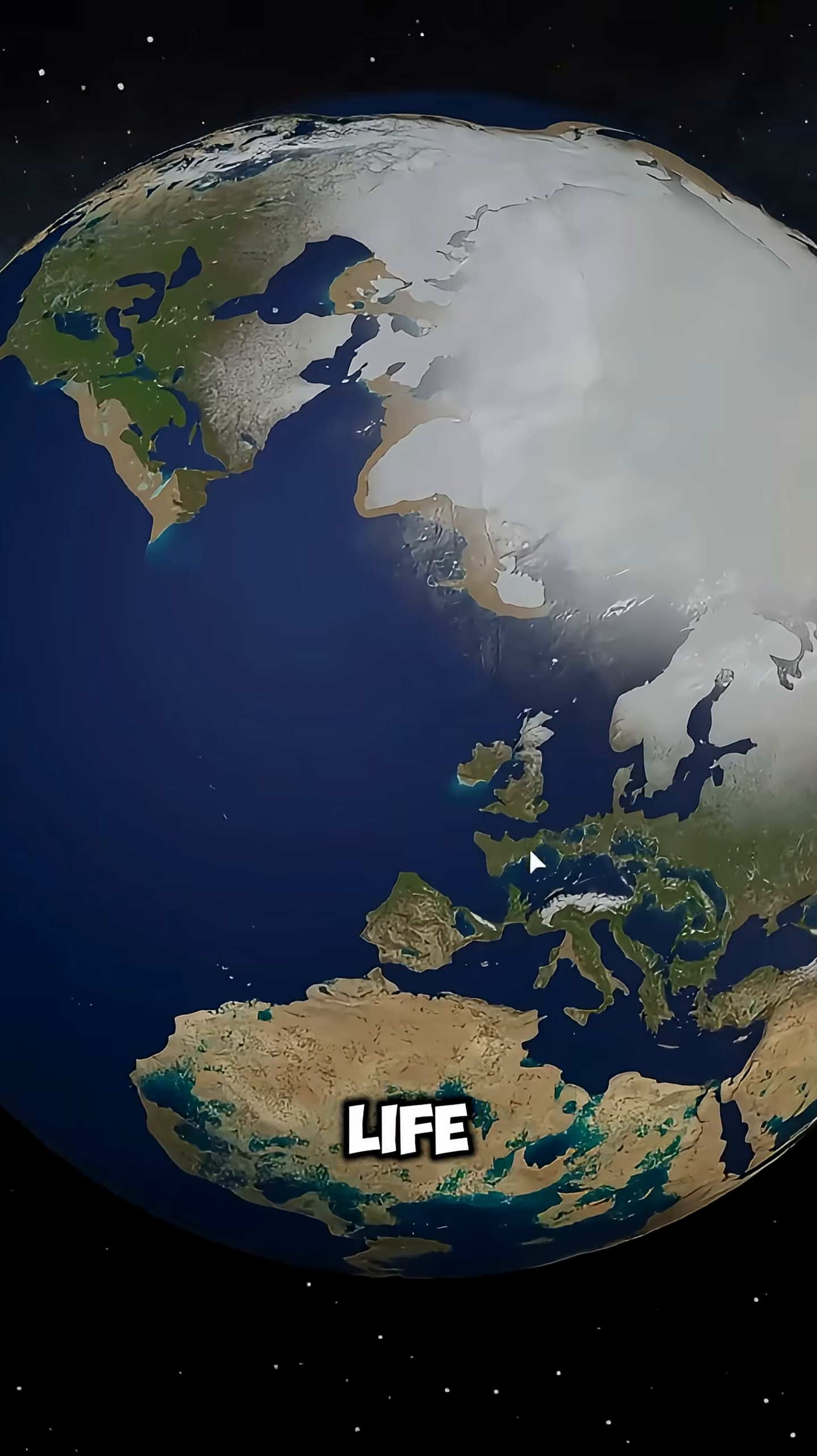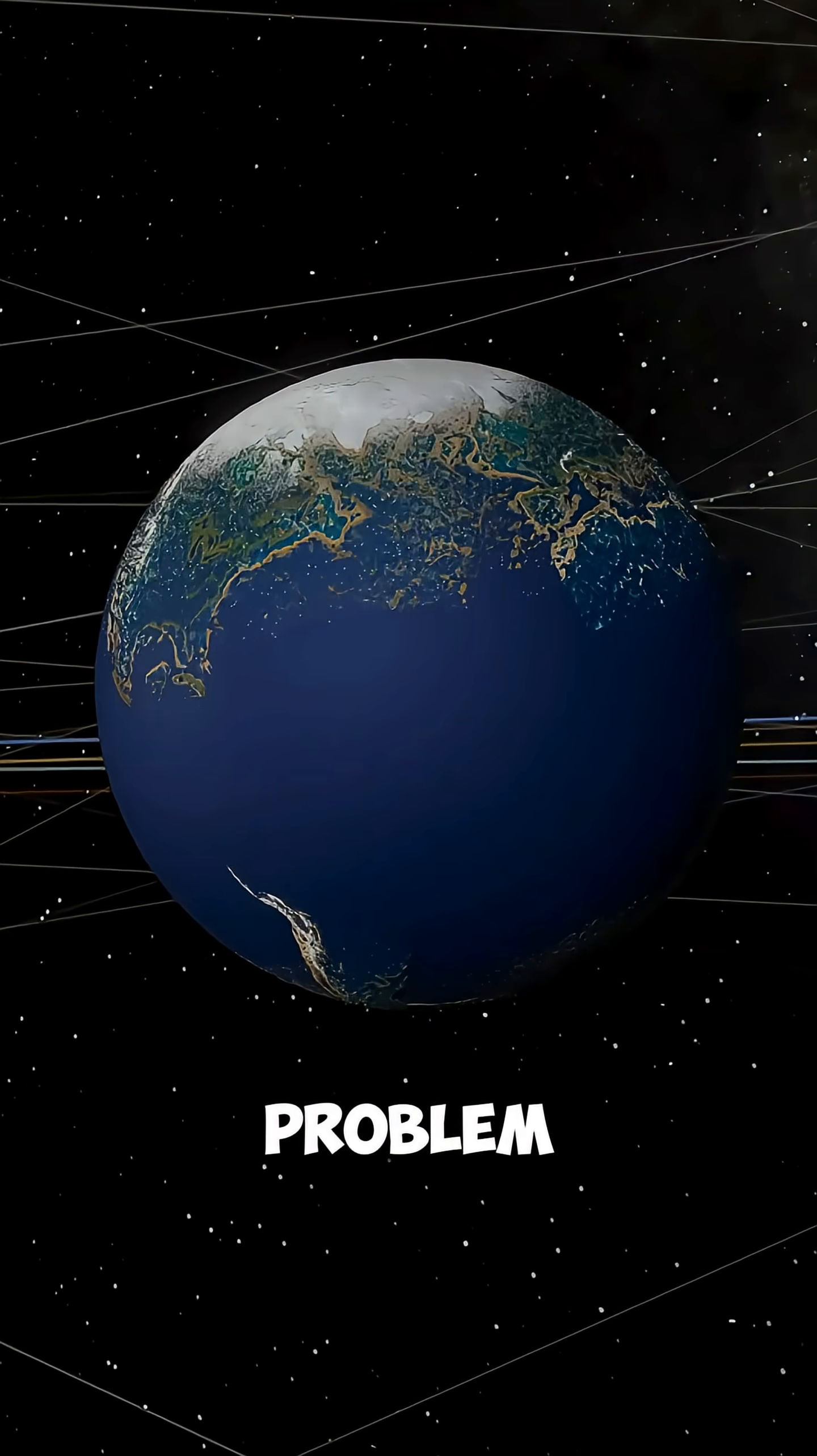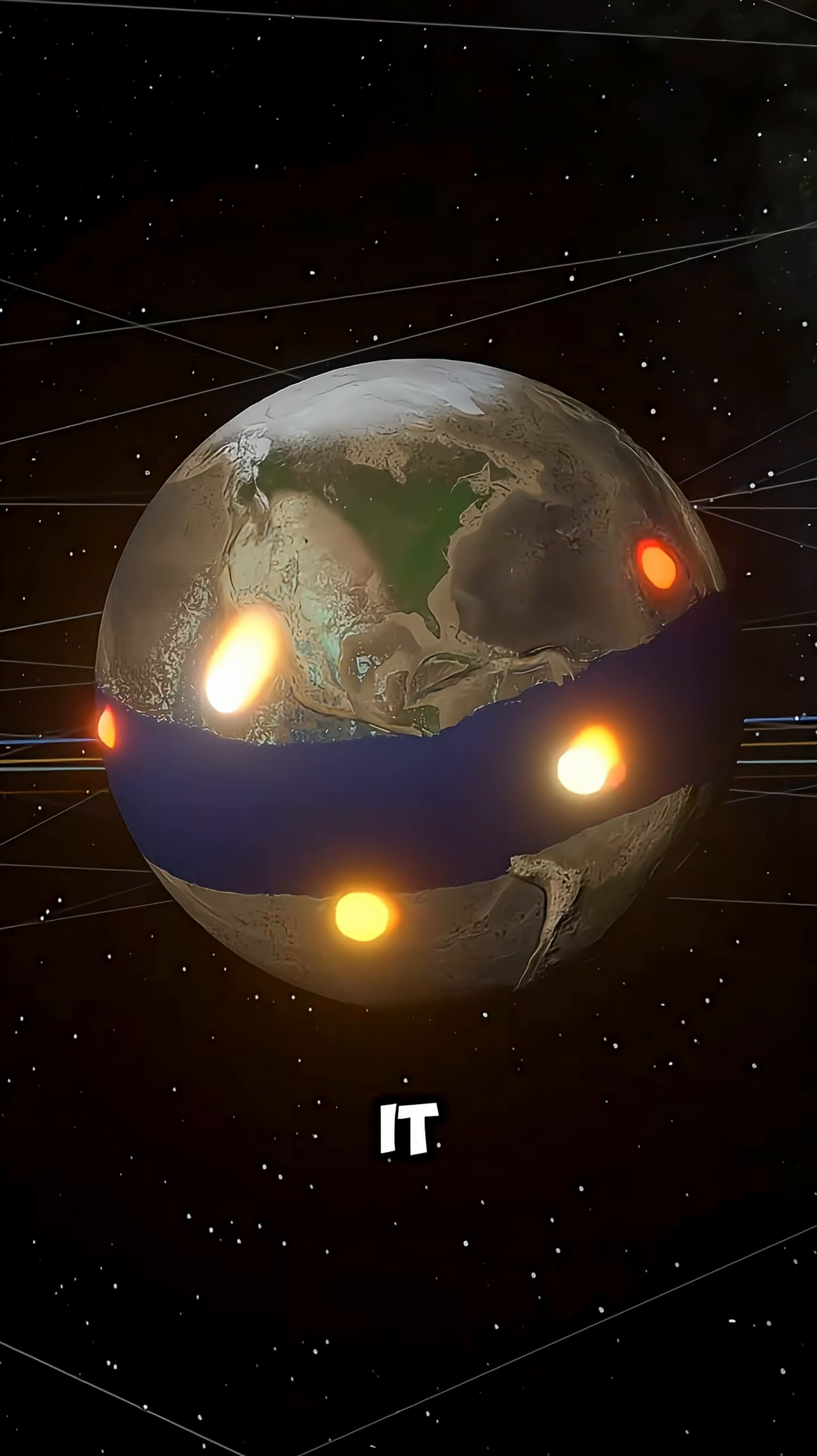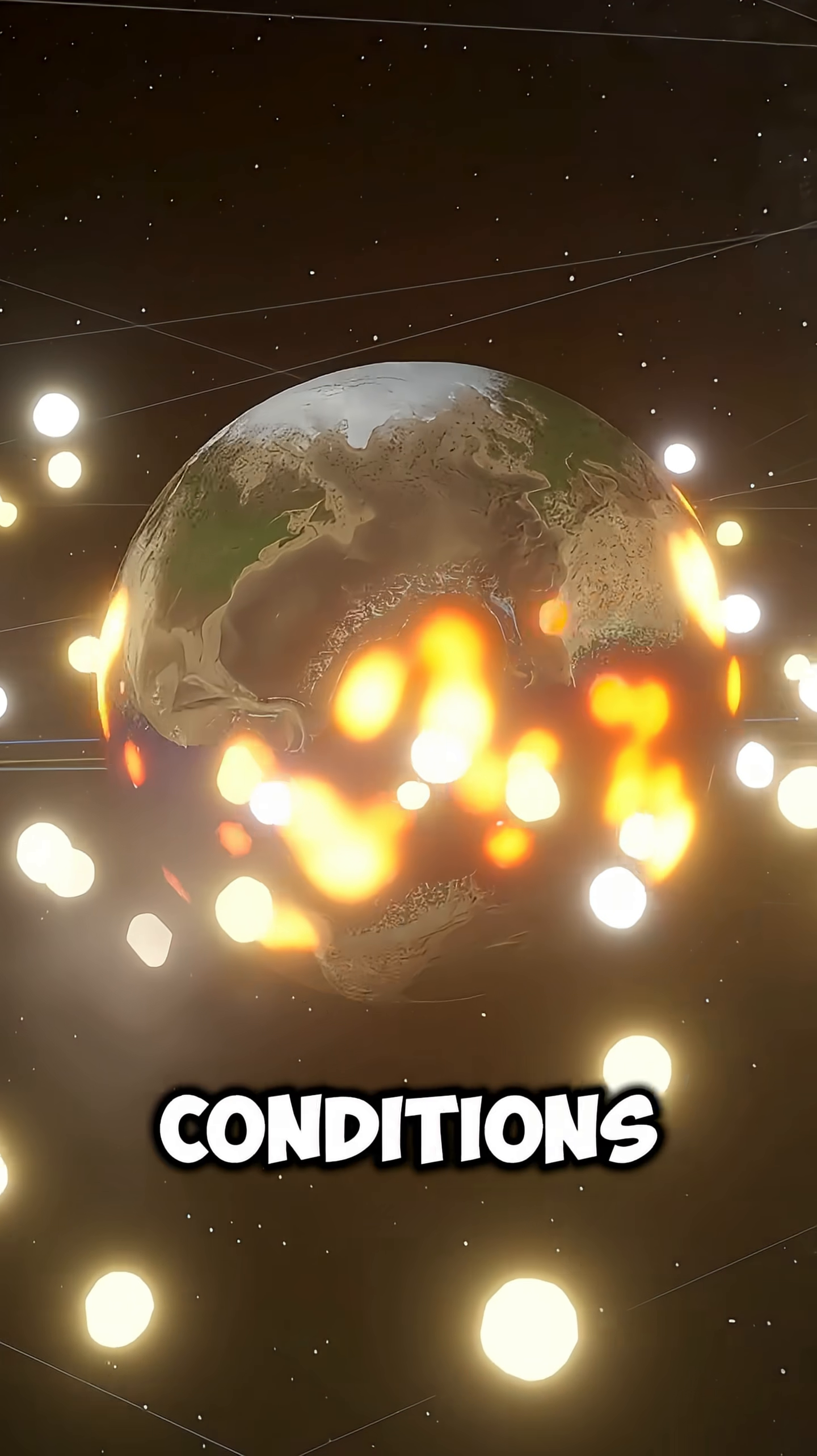Amazingly, the chances of life were still around 70%. But there was a small problem. With Earth spinning so fast, it would become noticeably flattened. Imagine living under those conditions.